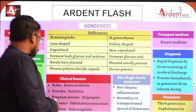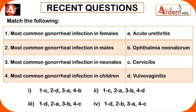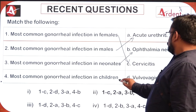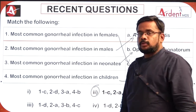Let's work through some MCQs. The most common gonococcal infection in females is cervicitis. The most common in males is urethritis. In neonates it is ophthalmia neonatorum. In children it is vulvovaginitis. So the answer is the fourth option.